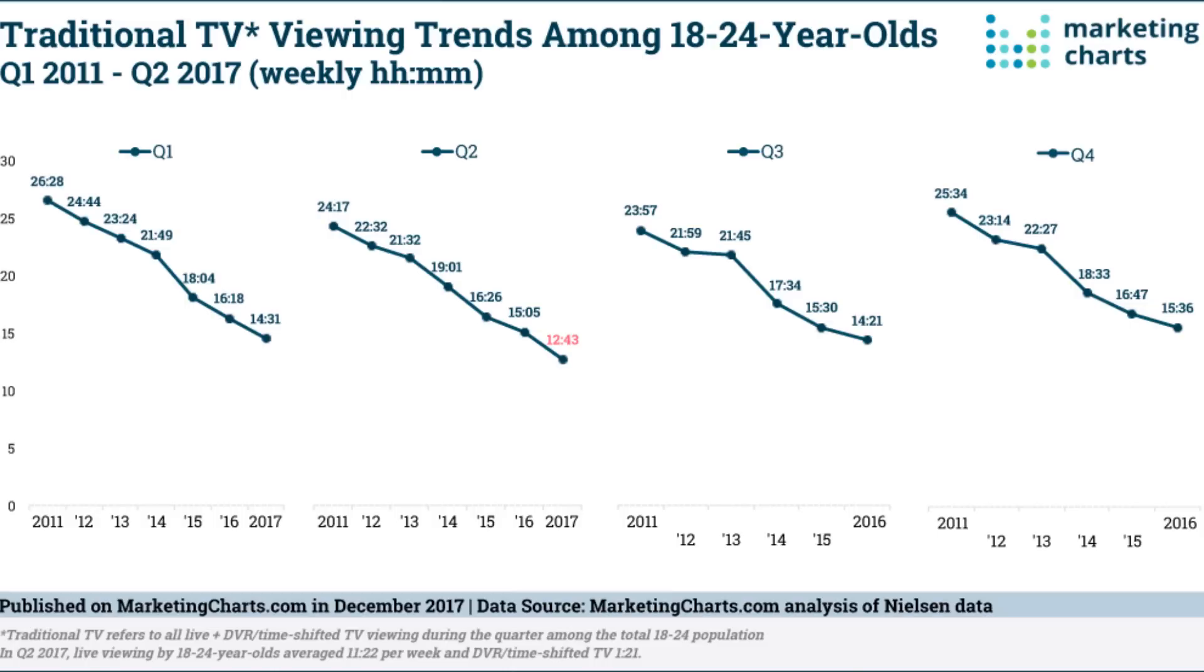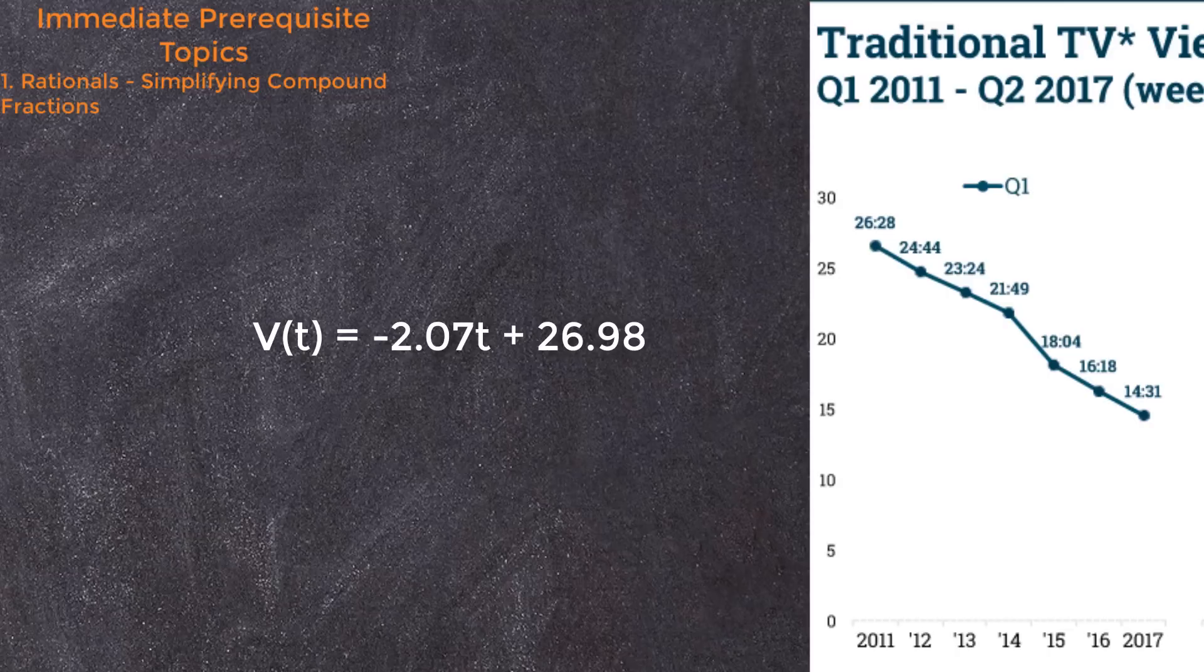Let's take a look at a quick example. According to Nielsen Market Watch, traditional TV viewing trends have been steadily declining. The year to year Q1 data can be modeled by the linear function seen here. What is the rate of change of this function and what does it mean in this situation?